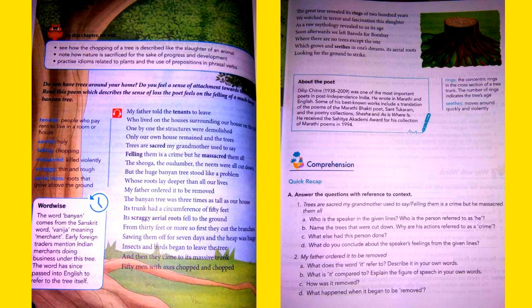So the poem which I'm going to start today gives us a description of how the emotions of a person is attached with a banyan tree. The poem also is compared with the description of slaughter of an animal with the chopping of a tree. The name of the poem which we are going to start today is Felling of the Banyan Tree by Dilip Chitre. This is the third lesson of our English book.